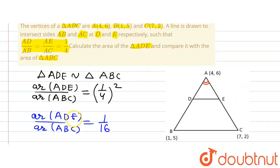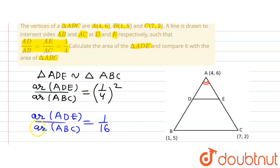So the ratio of the areas of triangle ADE and triangle ABC is 1/16. Now let's find out the area of triangle ADE. For that, let's first find out the area of triangle ABC, and from there we can easily find the area of ADE since the ratio is known.